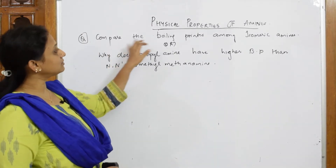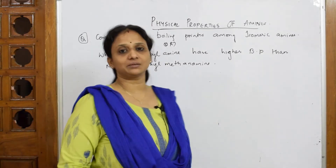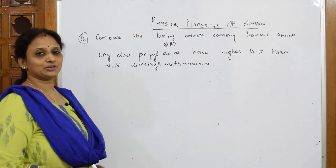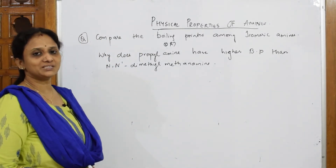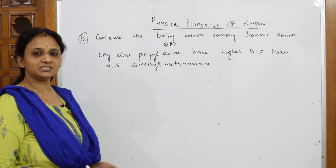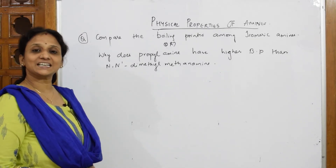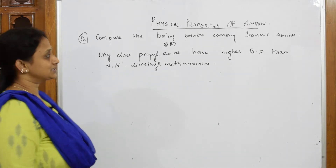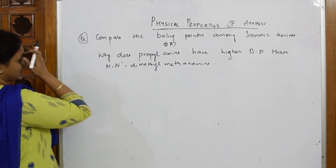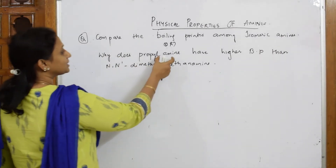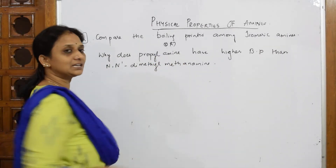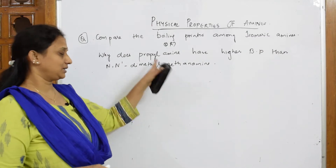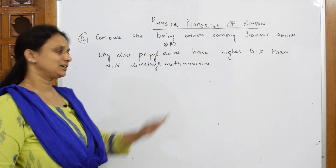Now we'll come back to one more concept: compare the boiling points among isomeric amines. What are isomeric amines? Basically, amines like primary, secondary, and tertiary — having the same molecular formula. Primary, secondary, and tertiary are called isomeric amines. This is one way of questioning; they give us a particular formula and ask us to compare.